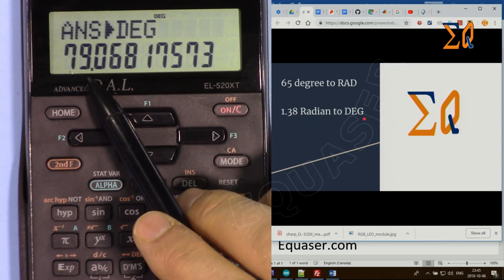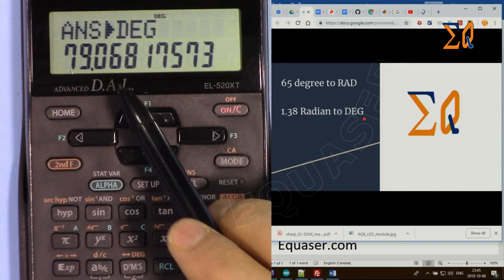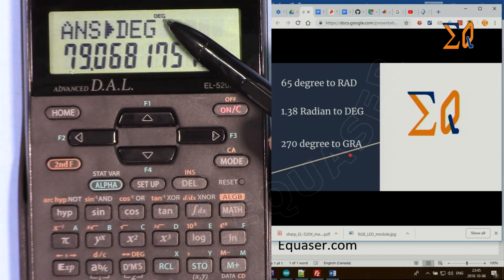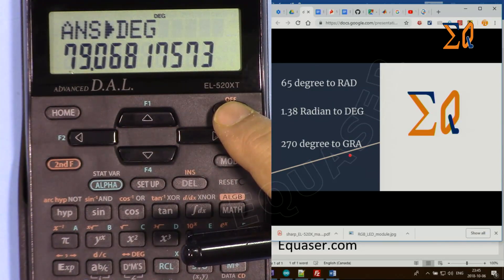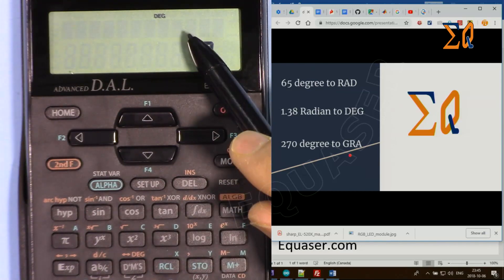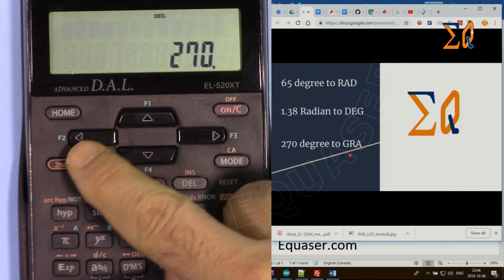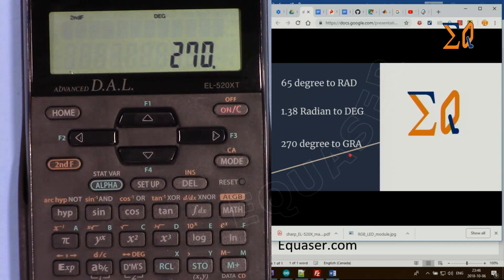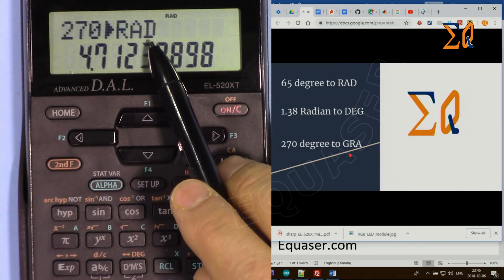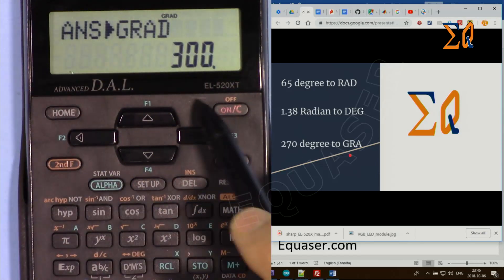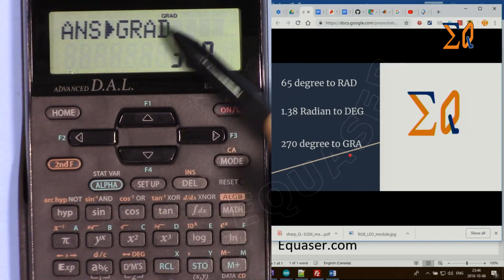Now you want 270 degrees to gradients. It's in degree mode. That's good. If not, we have to change it. 270, and we want to convert it to gradient. Press second function and DRG. Now it's radians. I don't want that. Second function, gradient, which is 300 in gradients, G-R-A-D.